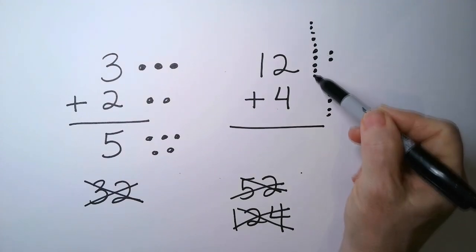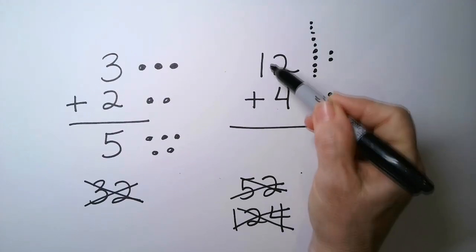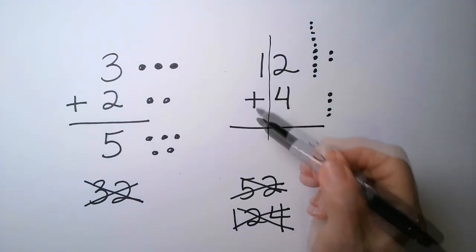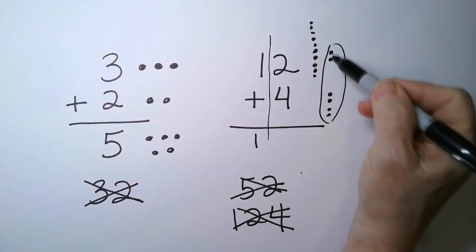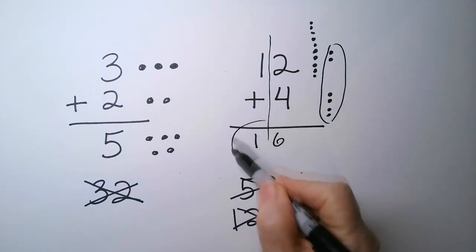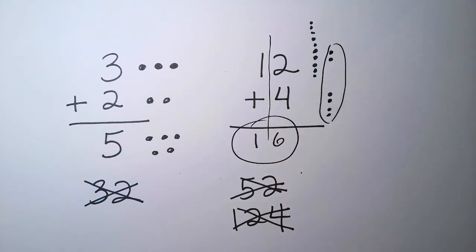So I'm going to add the 10's together, which is here. So I'm adding the 10's together. So 1 and then the 1's. So this group here, 2 plus 4 is 6. So my answer is 16. So 12 plus 4 is 16. So this is something you're already really familiar with.